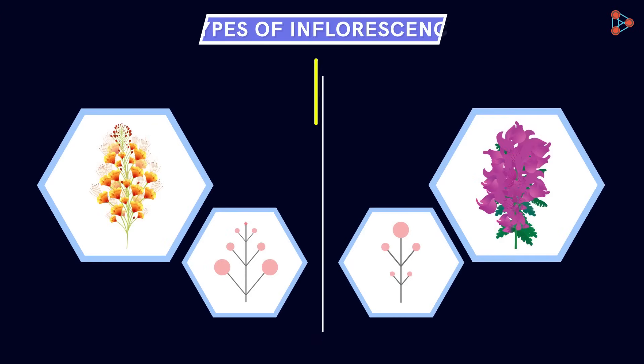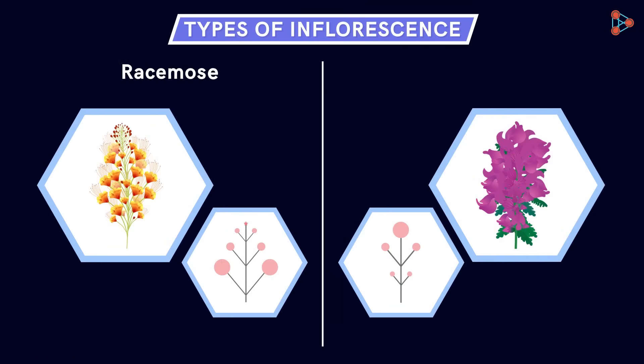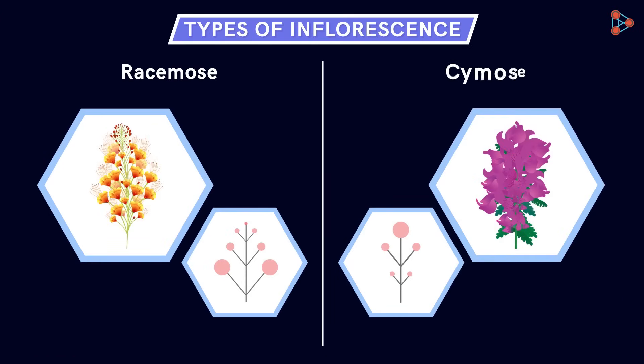To summarise, we find these flowers exhibiting racemose and these exhibiting cymose inflorescence. These typical patterns of arrangement help us study the plant in many ways.